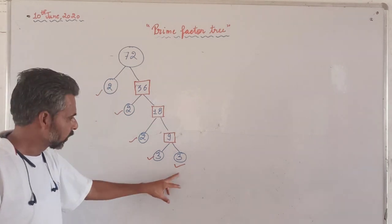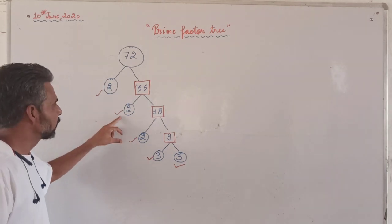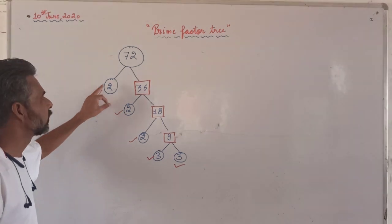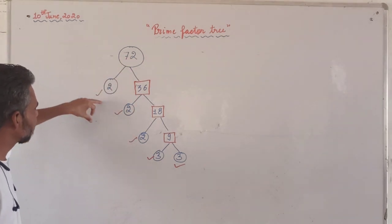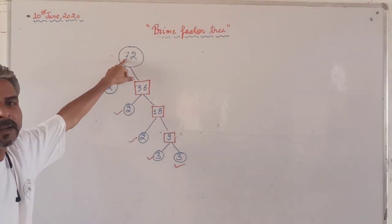Afterwards, we can check our factor tree. The numbers which we have divided by are all prime numbers. 2 and 3 are prime numbers. That's why this is called a prime factor tree. So we can check our answer by multiplying: 3 times 3 is 9, 9 times 2 is 18, 18 times 2 is 36, 36 times 2 is 72.